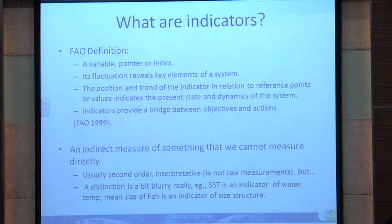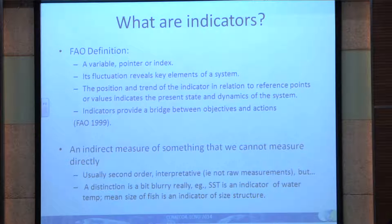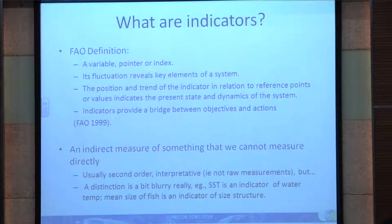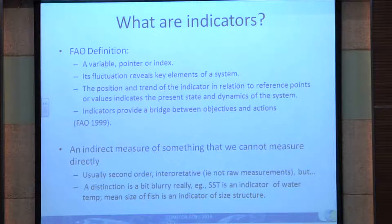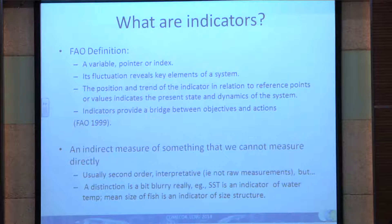So what are indicators? There are several definitions out there. I like to use the classic FAO definition: basically a variable, a pointer, an index — something that communicates information and changes over time, telling you something about the system or the issues you're studying. Its position in relation to reference points indicates where you are relative to where you might want to be or where you might not want to be. And it can also provide a bridge between objectives — if your objective is a healthy ocean and your indicator is some measure of eutrophication, it bridges the gap between your objective and what you do to achieve it.